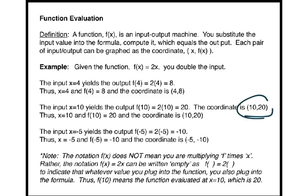Note, the notation f(x) does not mean you are multiplying f times x. Rather, the notation f(x) = 2x can be written 'empty' as f( ) = 2( ) to indicate that whatever you plug into the function, you also plug into the formula. Thus, f(10) means the function evaluated at x = 10, which we know to be 20.